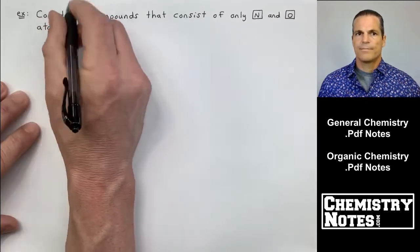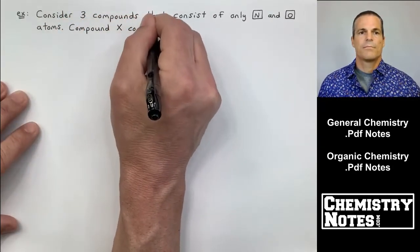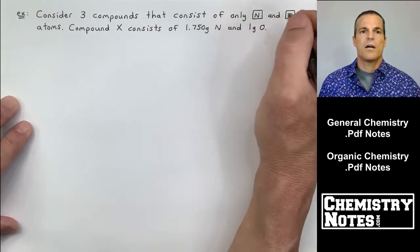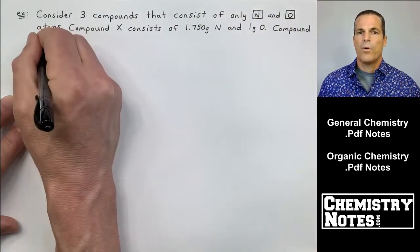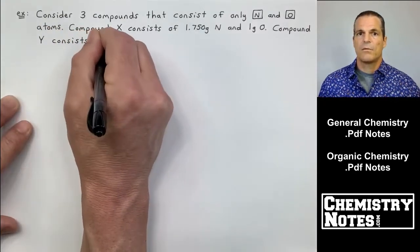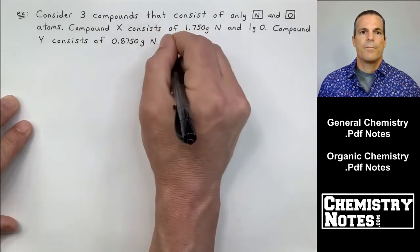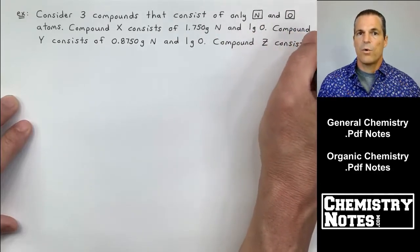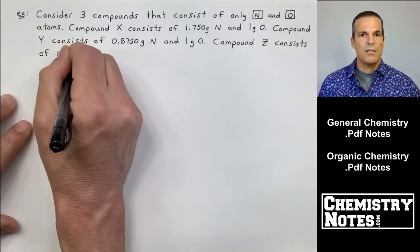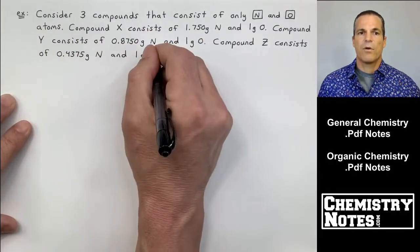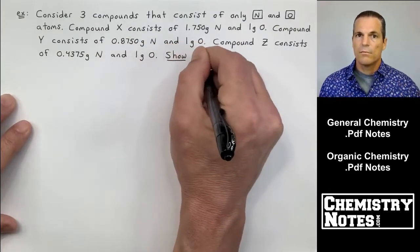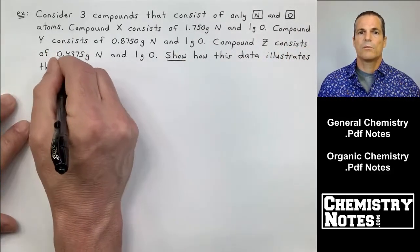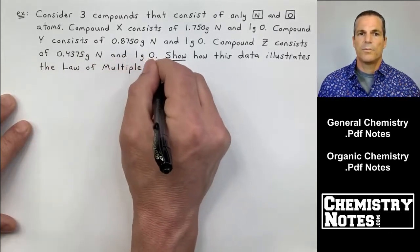So top of our new page of notes here, it says, consider three compounds that consist of only nitrogen and oxygen. We have a compound X, we're going to have a compound Y and a compound Z. It says compound X consists of 1.750 grams of nitrogen and one gram of oxygen. Compound Y consists of 0.8750 grams of nitrogen and still that one gram of oxygen. Compound Z consists of 0.4375 grams of nitrogen. And you guessed it, that one gram of oxygen still.